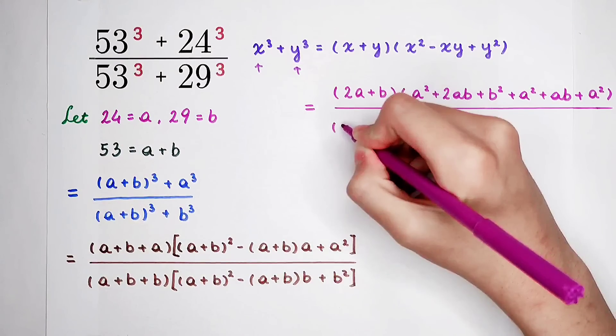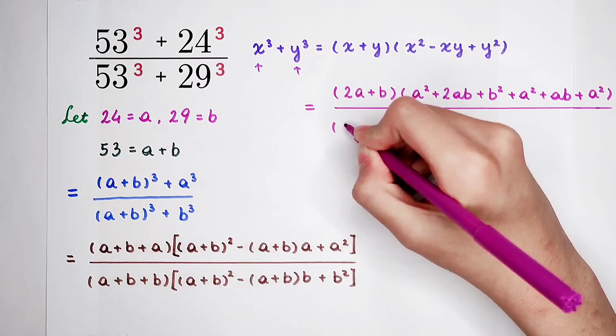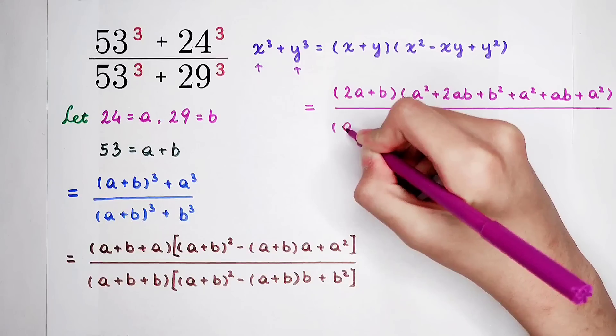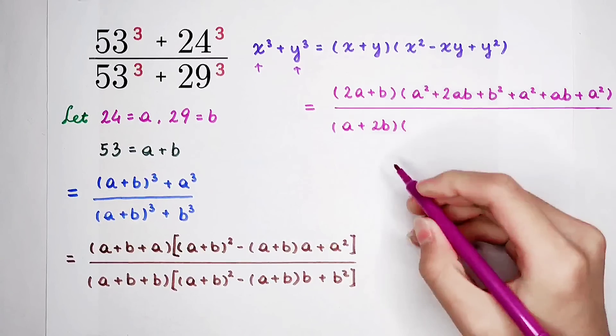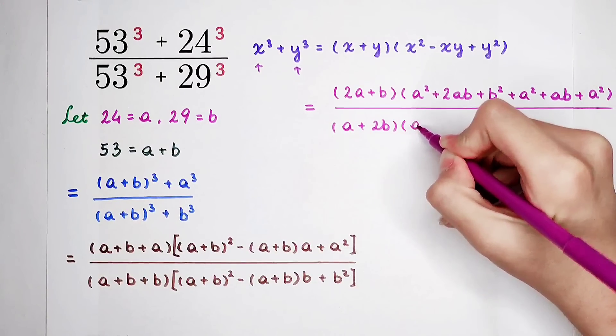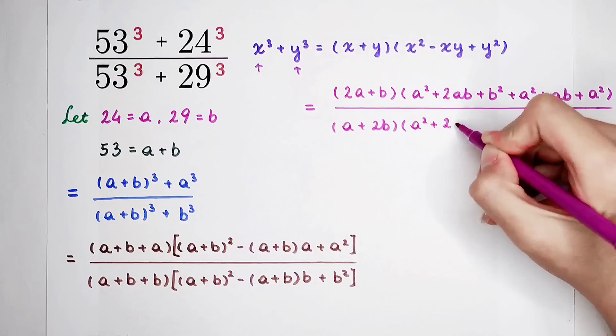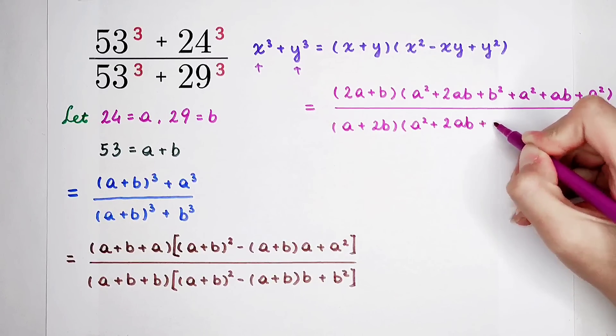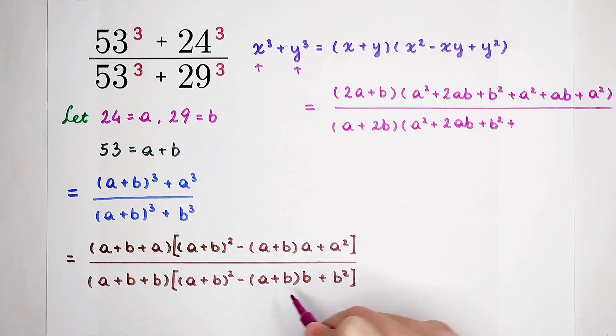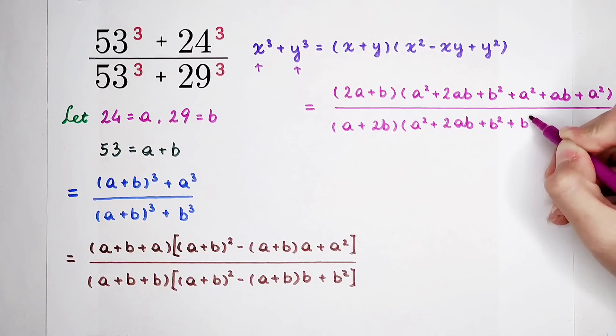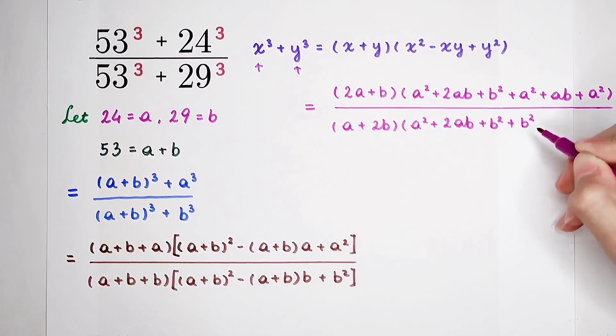So, then the denominator. It is 2b then plus a. Or I can write a plus 2b. Times. Here is still a squared plus 2ab plus b squared.